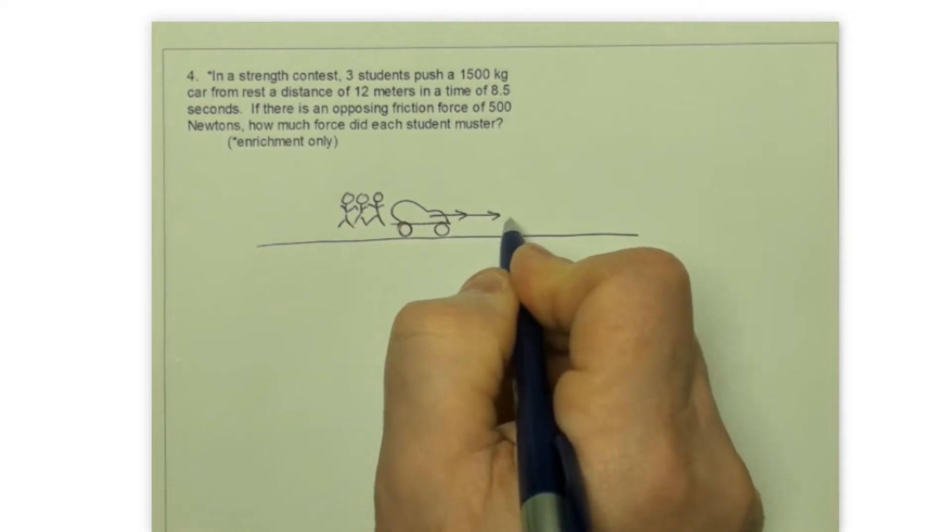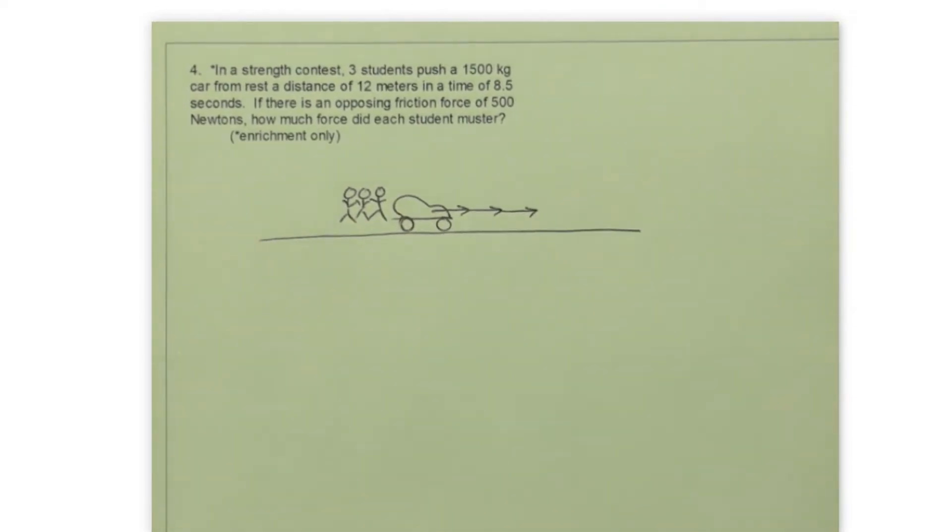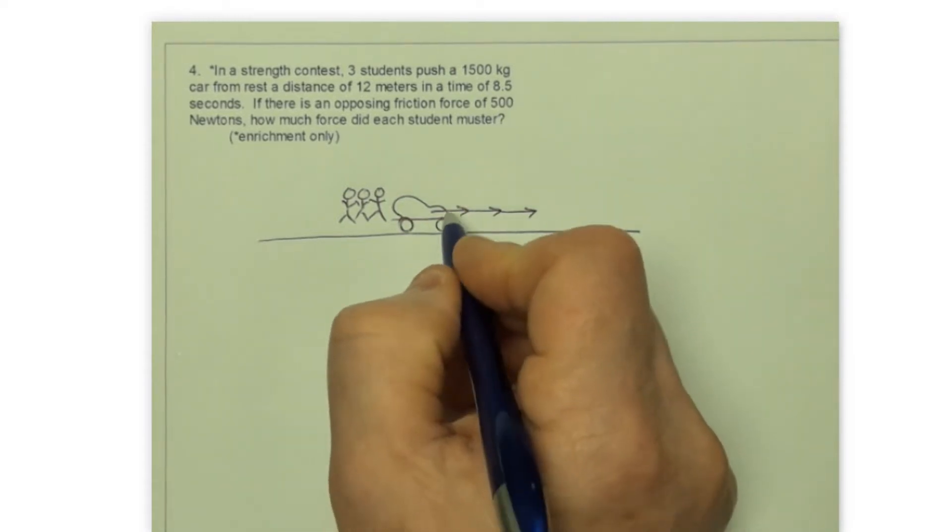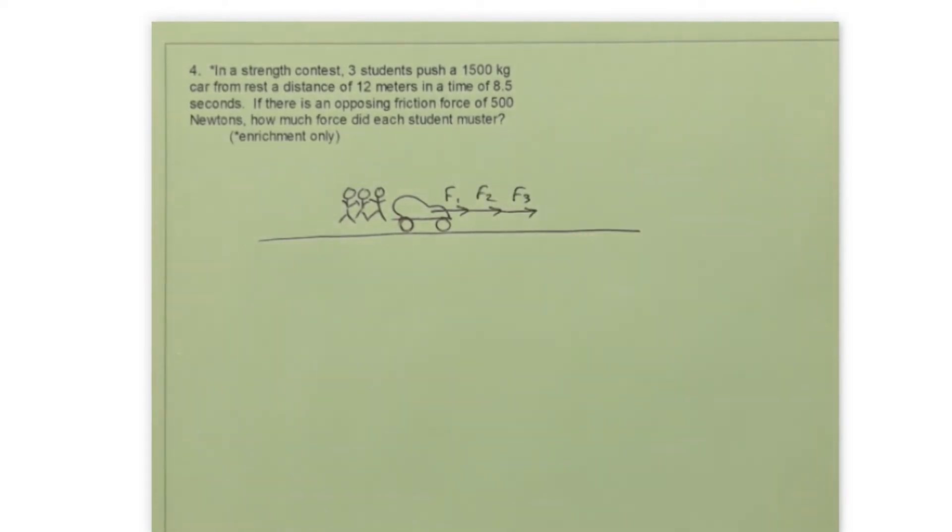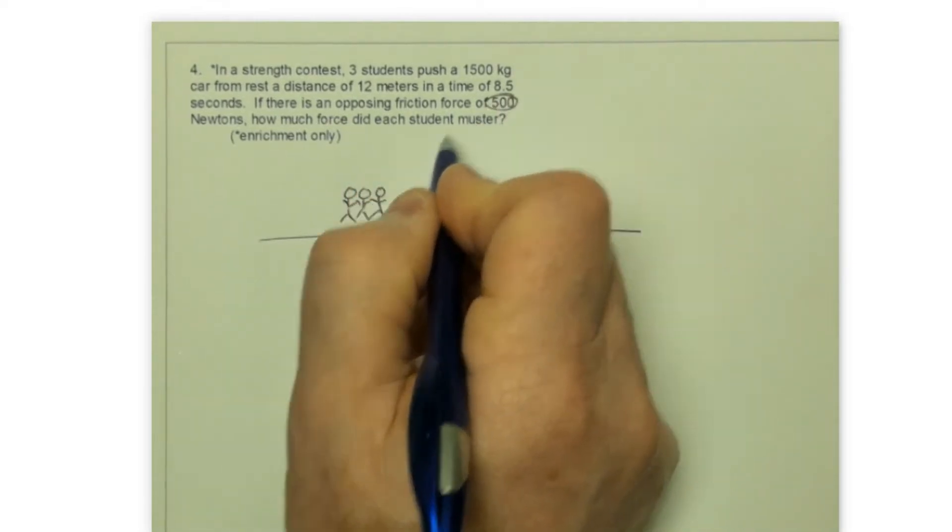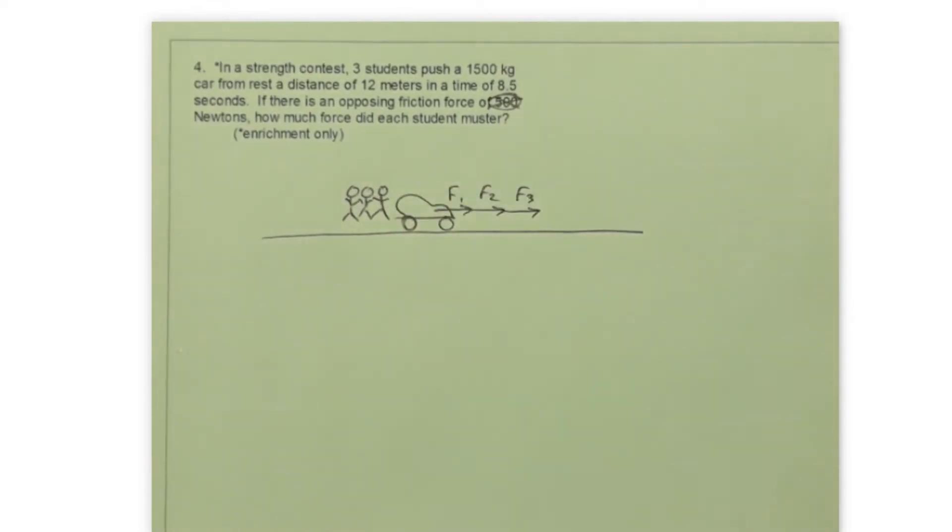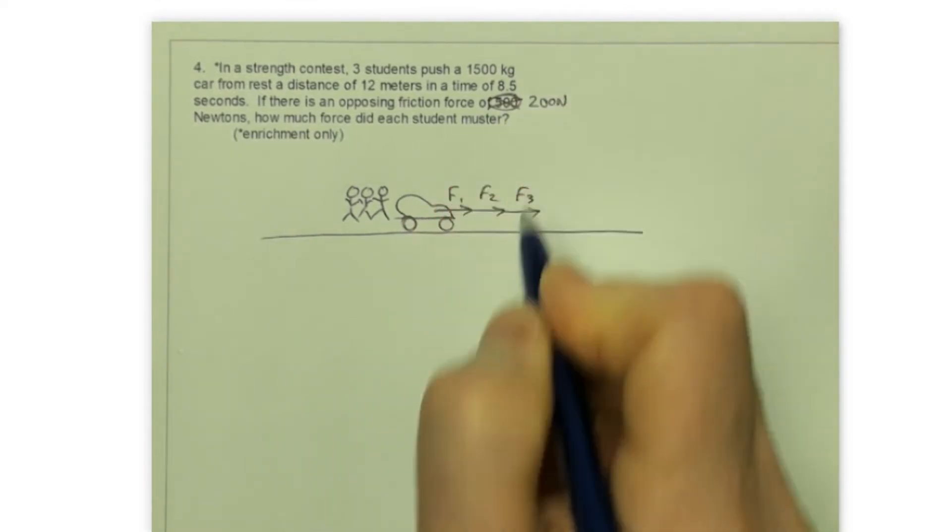But so we push in this car. We have three forces that are acting. And we're assuming for this diagram that all three of those forces are the same. It's likely that one or more of you pushed with different forces than the others. But nonetheless, these are force one, maybe force two, force three. So those are from the three persons that are pushing.